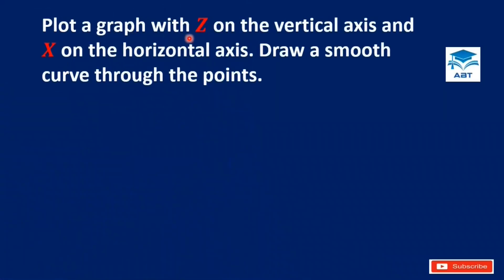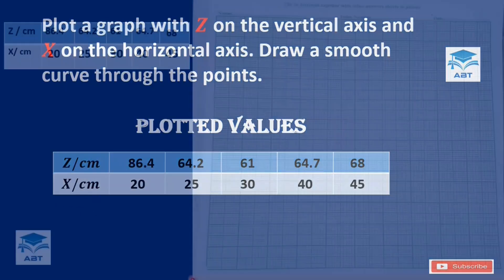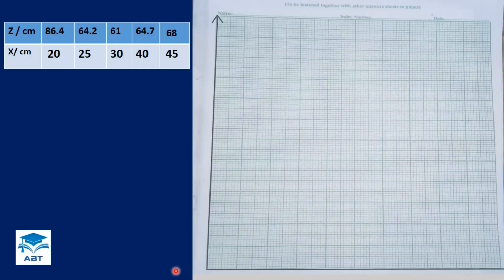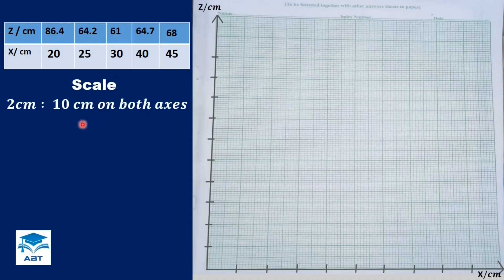We are going to plot a graph with Z on the vertical axis and X on the horizontal axis, then draw a smooth curve through the points. We have our plotted Z values and X values, all in centimeters. We draw our axes and choose a scale. Looking at the values, a scale of 2 cm representing 10 cm on both axes will be okay.